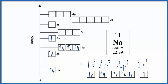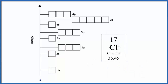If you need help writing electron configurations, there's a link in the description and at the end of this video. Pause and give this one a try — chlorine. Remember, we have 17 protons; since this is neutral we'll have 17 electrons. S orbitals hold 2, and p orbitals can hold up to 6.